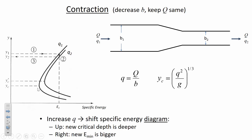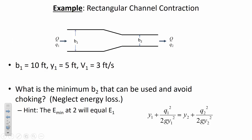Let's do some calculations to get a feel for what happens when we narrow the channel. At section one, the channel is 10 feet wide, flow depth is 5 feet, and average velocity is 3 feet per second. The question asks: how narrow can we make the channel before choking occurs? This is similar to the previous step-height example — we keep narrowing until we force critical flow conditions at section two.